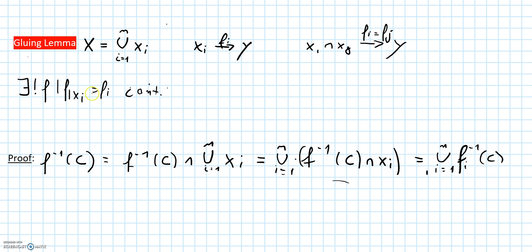So the only thing we need to prove is that f is continuous on all of X. And to prove that a map is continuous, it is enough to prove that the pre-images of closed sets are closed. So suppose that c is a closed subset of Y.